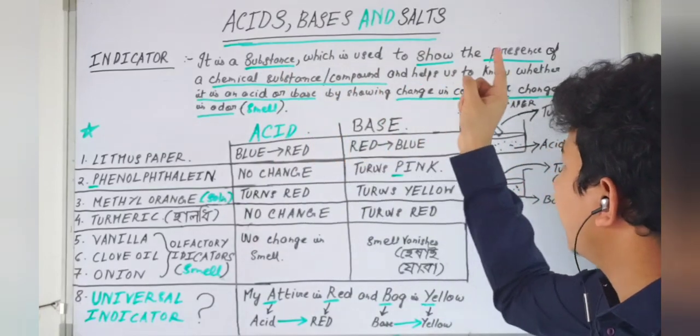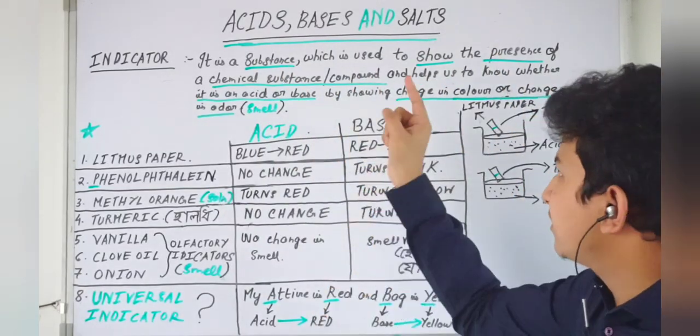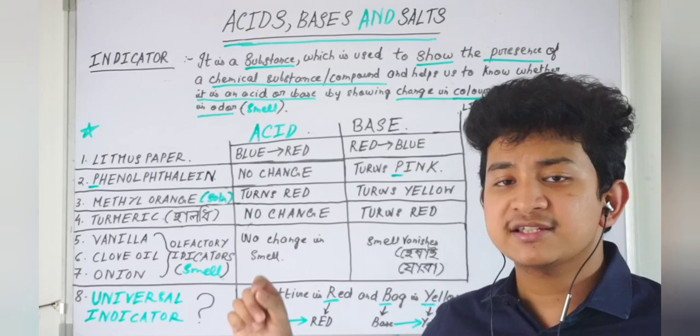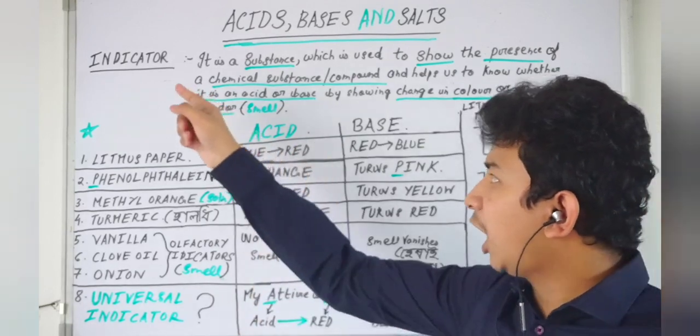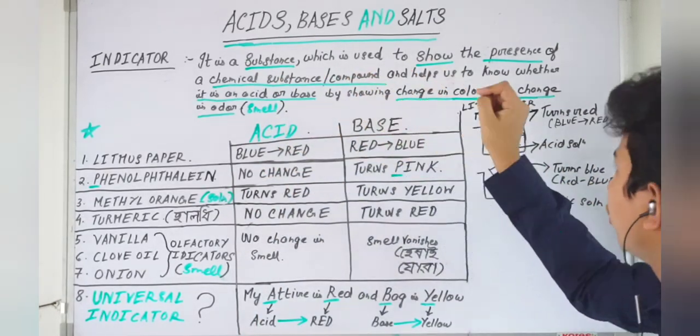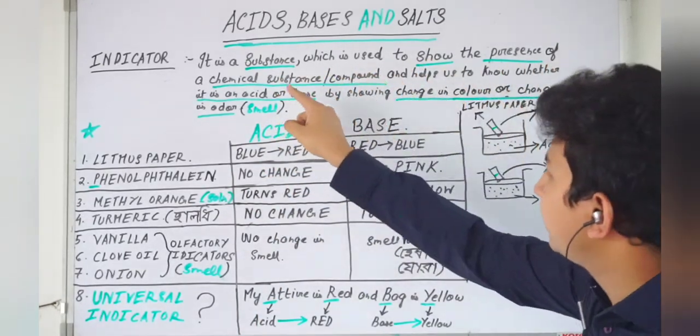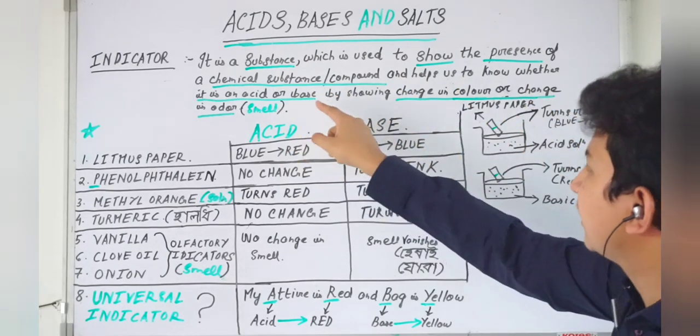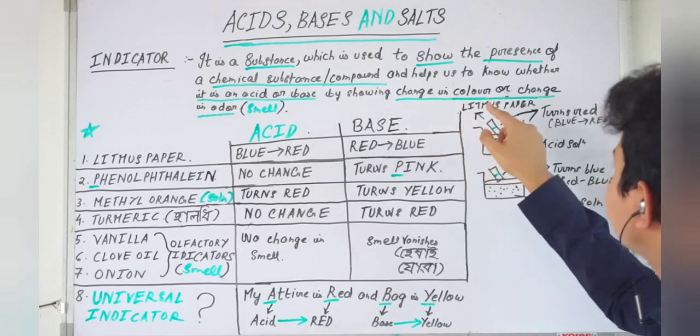Acids, bases and salts. This is the second chapter in chemistry. Now, my first topic is indicator. It is a substance which is used to show the presence of a chemical substance or compound and helps us to know whether it is an acid or base by showing change in color or change in odor or smell.